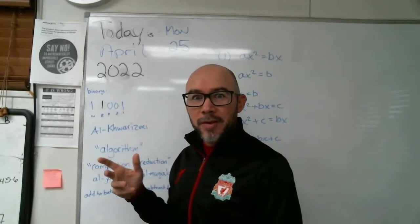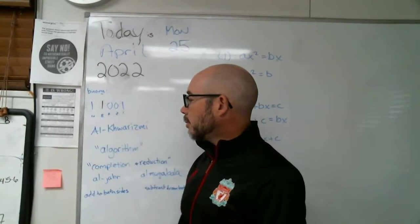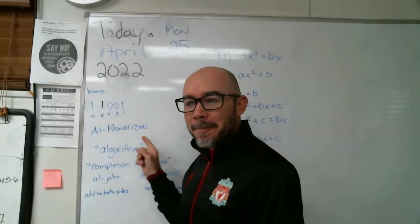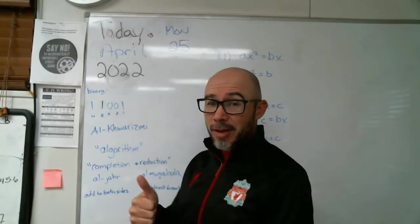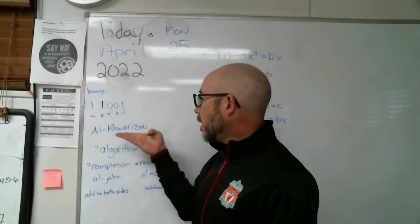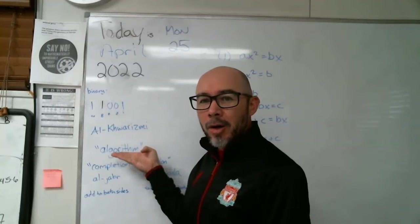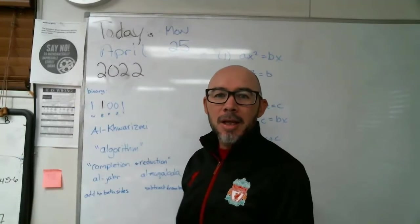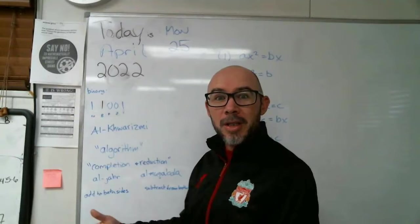And algebra, that word was invented by an Arab mathematician. And his name was Al-Khwarizmi. Very famous in math circles, Al-Khwarizmi. His name is where we get the word algorithm, which is usually like how we explain a series of steps that you would take to get the solution. Step one, step two, step three.